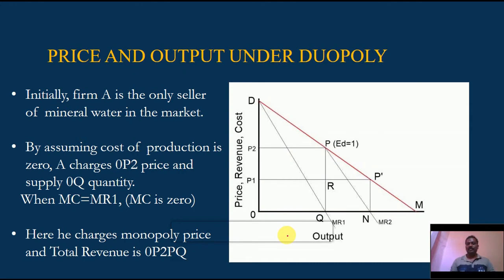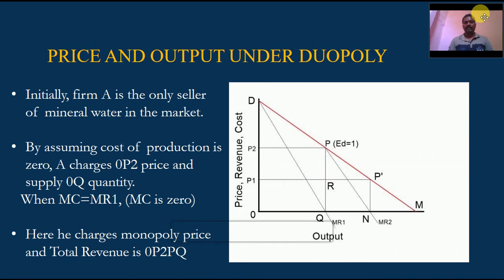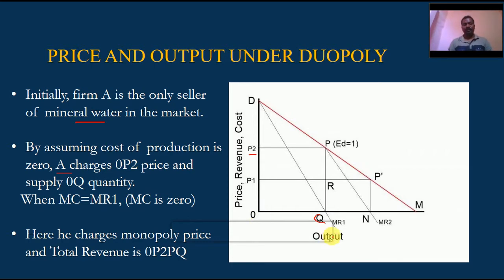Let us understand this theory in detail with the help of a graph. Initially, Firm A is the only seller of mineral water in the market. Assuming cost of production is zero, it charges price OP and supplies quantity OQ. When MC equals MR equals zero, the firm charges the monopoly price. Total revenue equals OP₂PQ — this is the monopoly price charged since there is only one producer in the market.